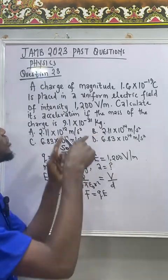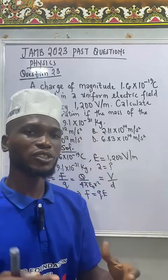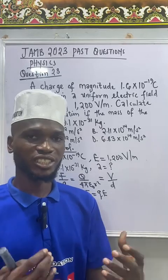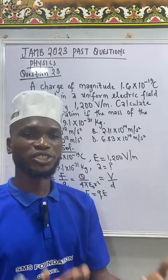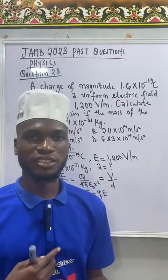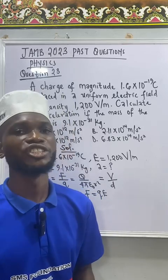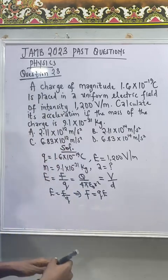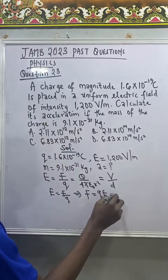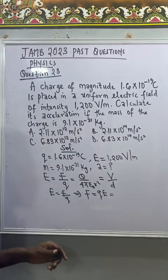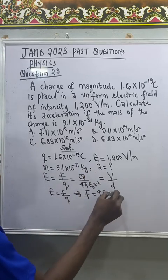Now when force act on the charge it will subject the charge to an acceleration to make the charge move in the electric field. Now when the charge move, if we give it an acceleration a, the formula for force can still be written as mass times acceleration.